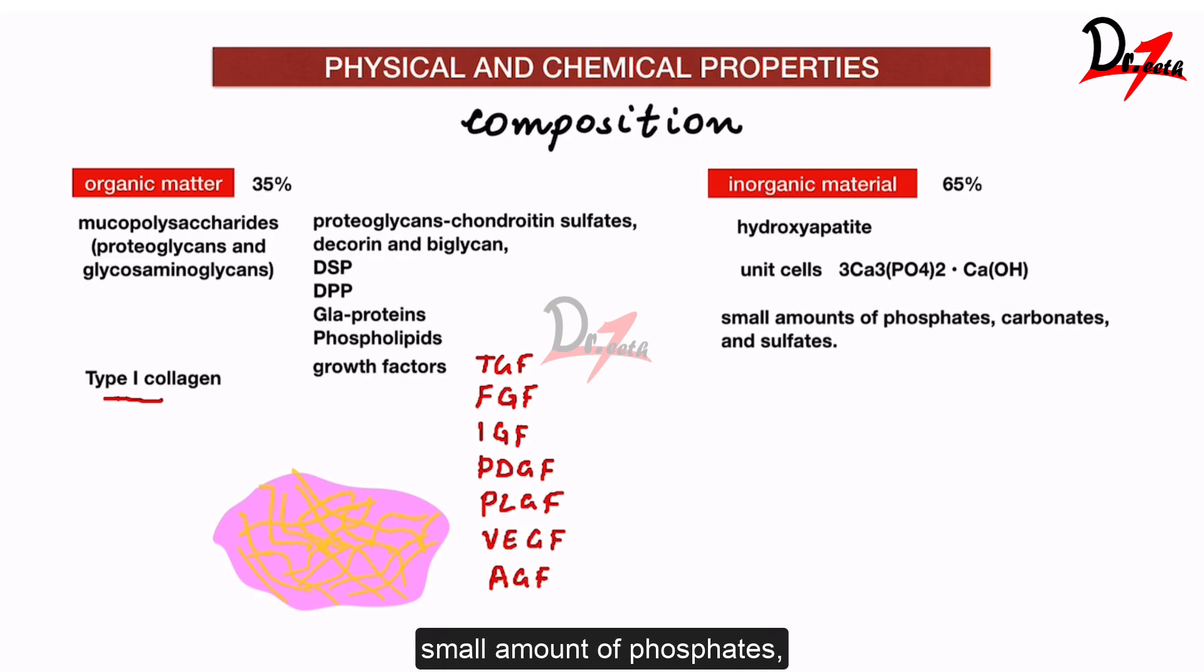Apart from this, we have small amount of phosphates, carbonates and sulfate. These crystals are poor in calcium but they are rich in carbon when we compare them to enamel.